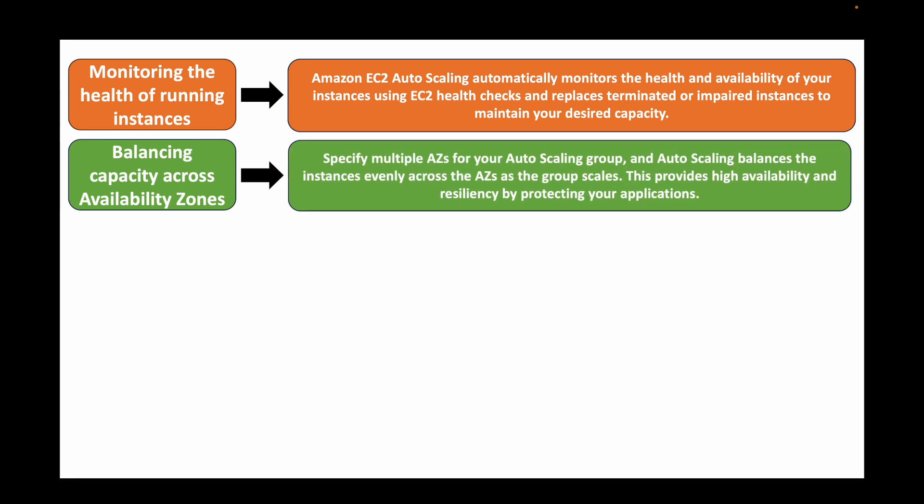The next feature is balancing capacity across availability zones. Using multiple availability zones is very important for making your infrastructure highly available. When creating an auto scaling group, we specify multiple availability zones, and when launching instances it will balance and evenly distribute those instances across the availability zones we have defined, ensuring high availability and resiliency for the application.